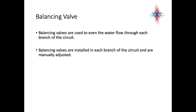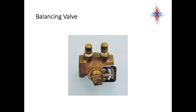Balancing valves even out water flow through each branch of a circuit and are installed at each branch for manual adjustment. You normally see them in commercial applications, large apartment buildings, or hotels. By attaching a balancing gauge and knowing the pipe diameter and inlet/outlet pressure, you can determine exact flow in gallons per minute. Once set, mark the position so it can be replicated if the valve needs to be replaced.